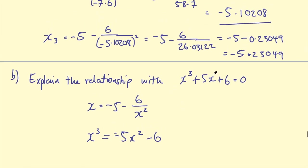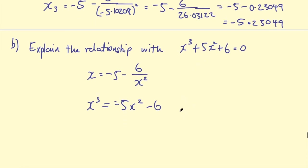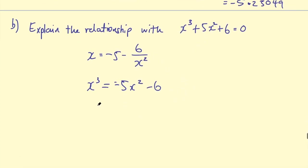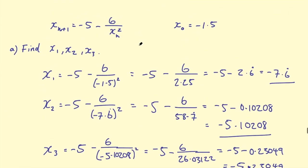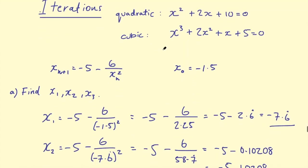I think this should be a squared in here. Whoops, sorry. And then, plus both of those to this side. So I've got x³ + 5x² + 6 = 0. So just by showing how to rearrange the formula, you show the connection between the iteration and the cubic. Hopefully that's kind of gone over some of the basics of iterations.